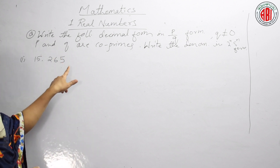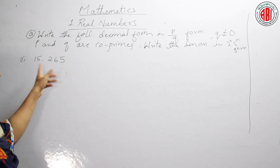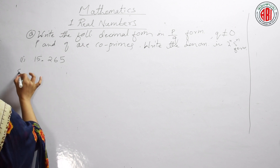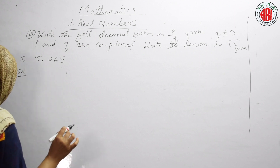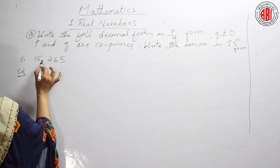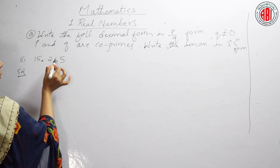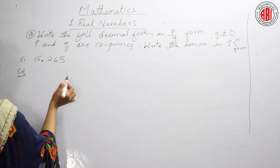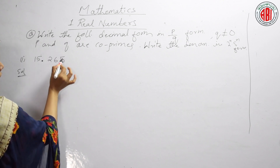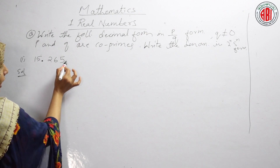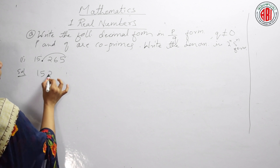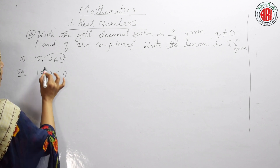How many decimal digits do we have after the point? The point is here after 15. After the point: 1, 2, 3 — three decimal digits. So what we have to do is shift the point to the right side after the last digit, giving us 15265.